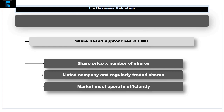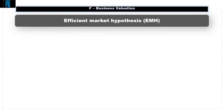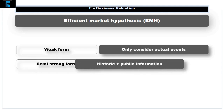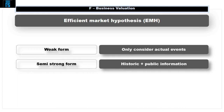Market efficiency is concerned with how quickly and accurately a market interprets available information and updates share prices accordingly. One interpretation of this final aspect is provided by the Efficient Market Hypothesis, or EMH. This states that markets operate at one of three levels of efficiency. A weak form efficient market will only consider things that have actually happened, including past share purchases. It will not reflect latest information with regard to expected future performance. As such, the quoted share prices cannot be guaranteed as up to date.